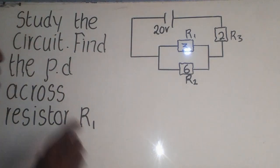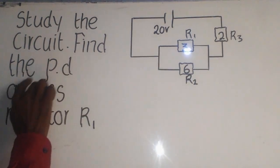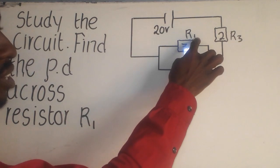We have a physics question that says study the circuit, this circuit here, find the PD across the resistor R1, this R1 here.